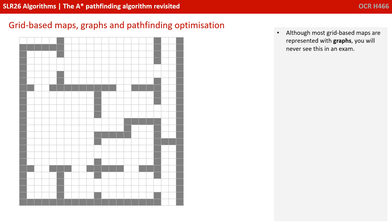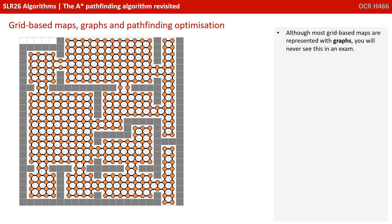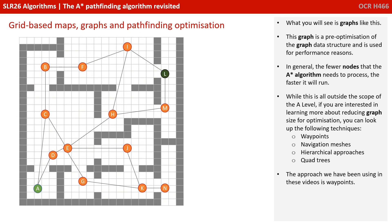Although most grid-based maps are represented with graphs, you will never see something like this, for example, in the exam. You will see a graph like this. So this graph is actually a pre-optimization of the graph data structure and is used for performance reasons. Of course, in general, the fewer nodes that the A-star algorithm needs to process, the faster it's going to run.